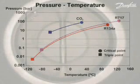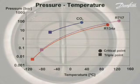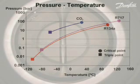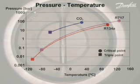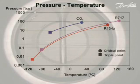When compared with commonly used refrigerants R134A and R717, CO2 has some unique characteristics. It operates at a much higher pressure but across a narrower temperature range than both R134A and R717. The pressure at the triple point is high and the temperature at the critical point is low. These facts must be taken into account when CO2 is utilized as a refrigerant.